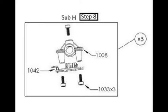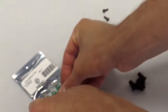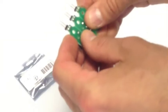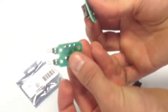Sub-assembly H is the limiter switches. You'll want to grab your switches, and they come in a pack of three. You'll break them apart very carefully.